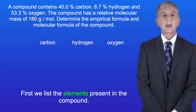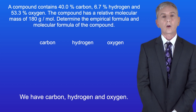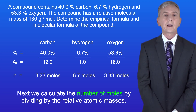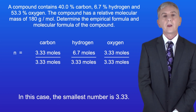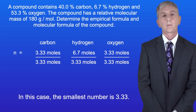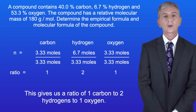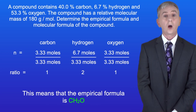First we list the elements present in the compound: carbon, hydrogen and oxygen. We then write in the masses or percentages of each element. Next we calculate the number of moles by dividing by the relative atomic masses. We then find the ratio by dividing all the numbers by the smallest number. In this case the smallest number is 3.33. This gives us a ratio of one carbon to two hydrogens to one oxygen. This means that the empirical formula is CH2O.